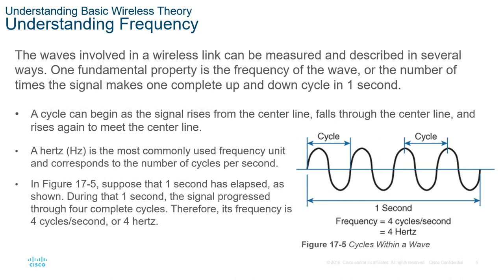The wave involved in a wireless link can be measured and described several ways. Frequency is one of the main ones — it is the measure between two points. A cycle is one up and one down back to the original state, and amplitude is the height of one of those cycles. We measure these cycles in hertz (Hz), the most commonly used frequency unit, which corresponds to the number of cycles per second. For example, if one second elapses and there are four cycles, we have four hertz.